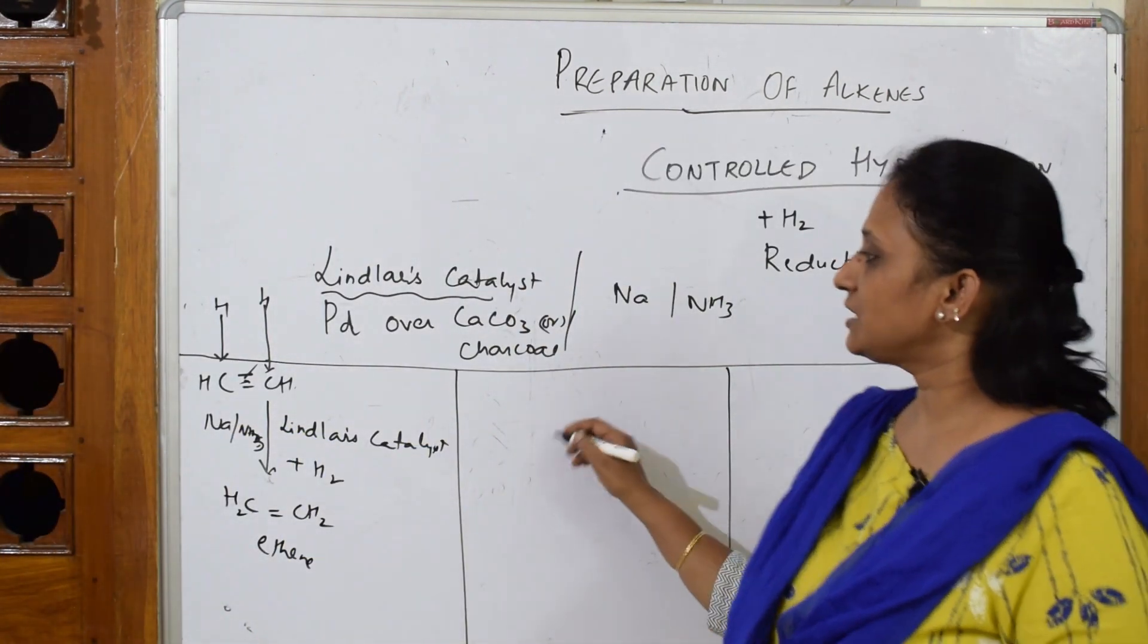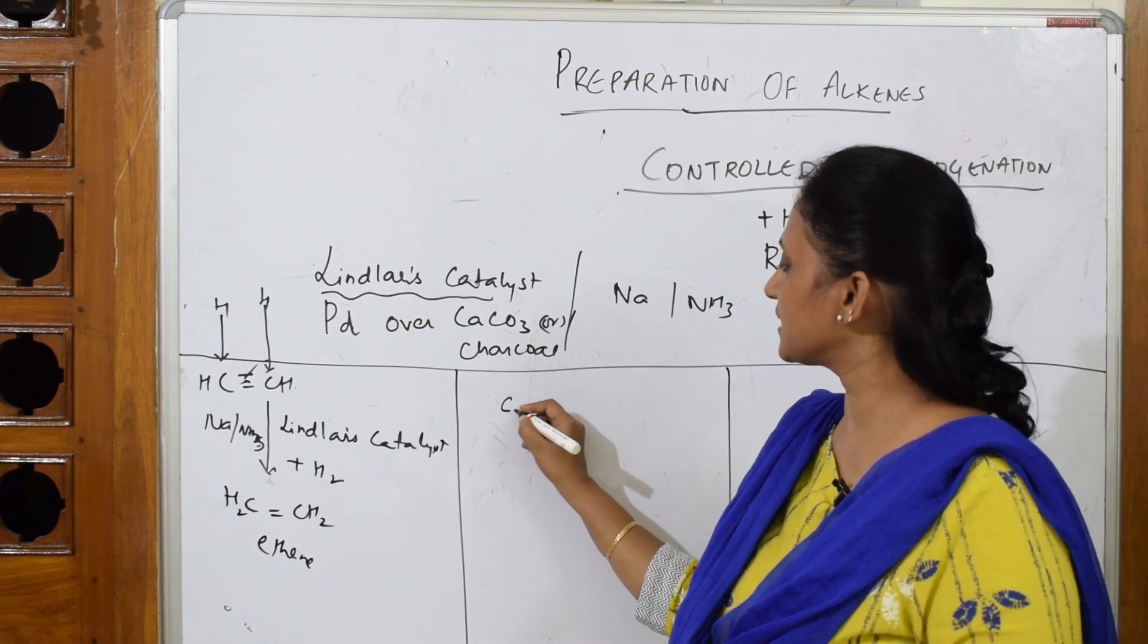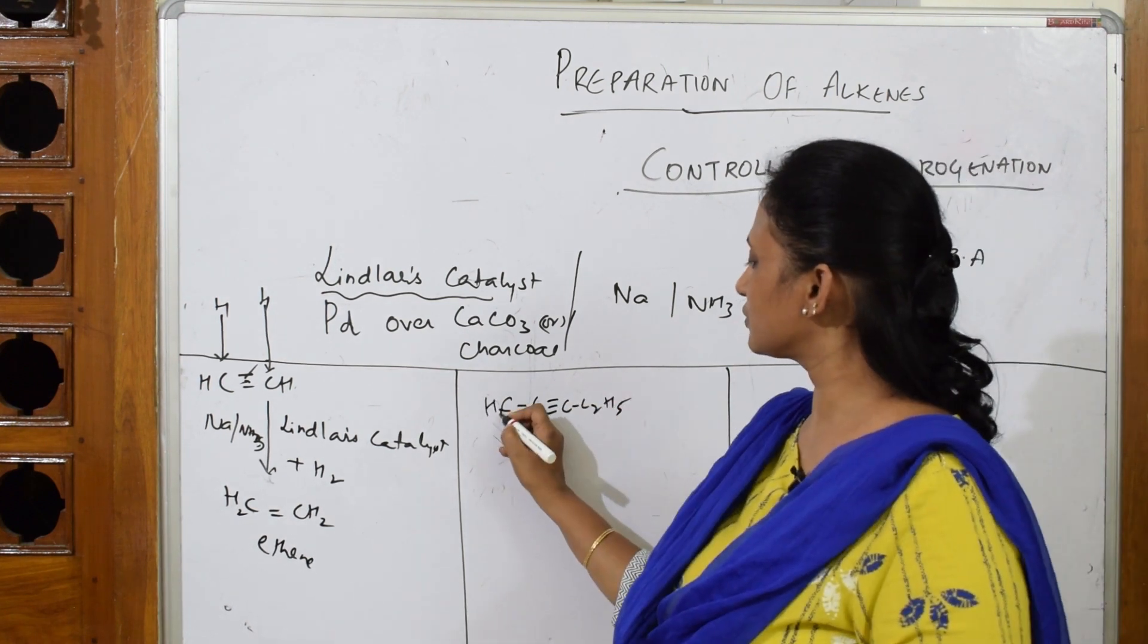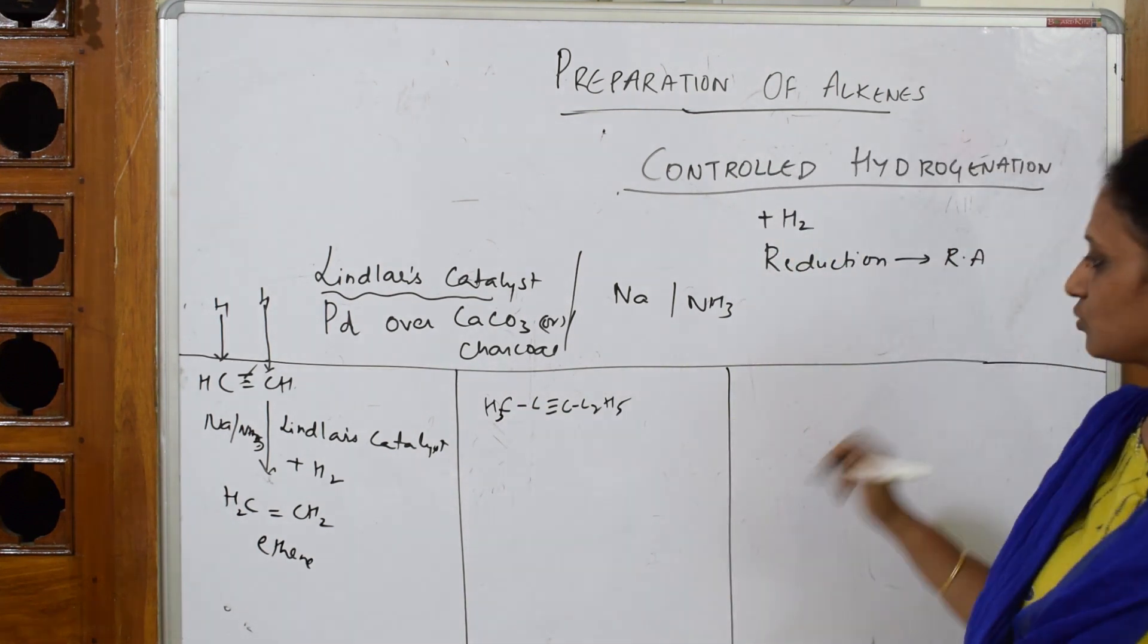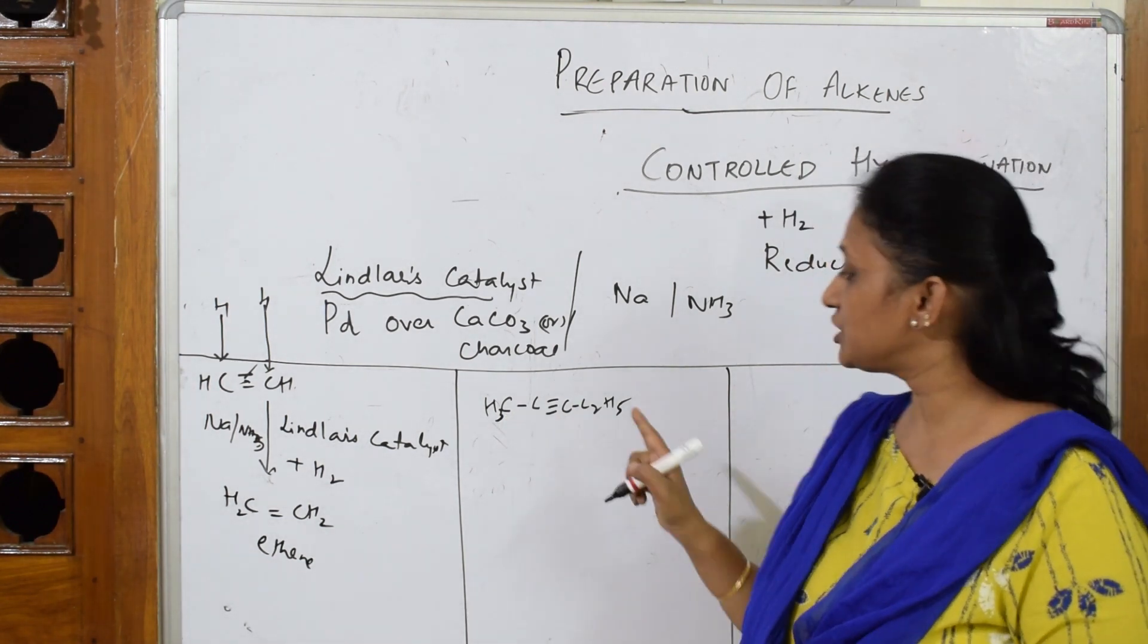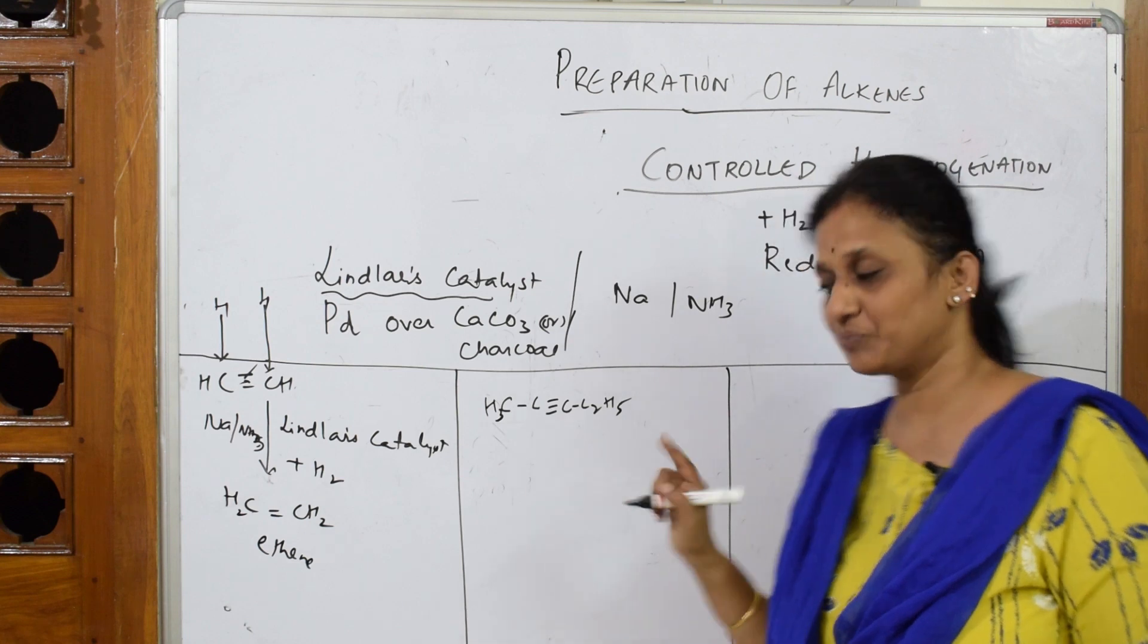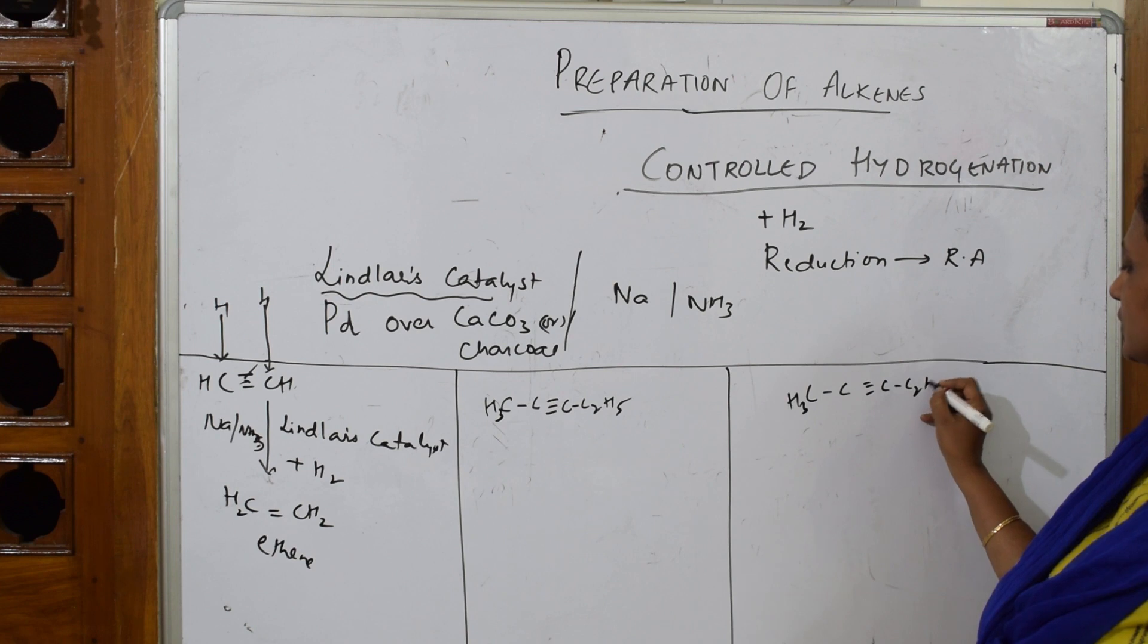Let me take one more example here. Suppose if I take this example: one, two, three. This is a quite common example which is there also in your comprehensive lab. Let us count: one, two, three, four, five - pent. Which pent is that? One, two - pent-2-yne. The same thing: CH3-C triple bond C-C2H5. This is also pent-2-yne.